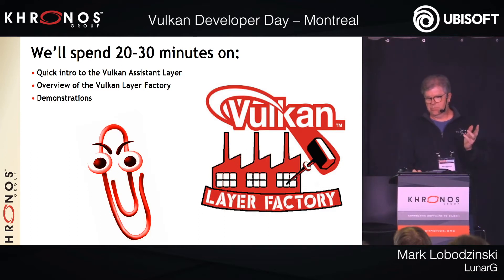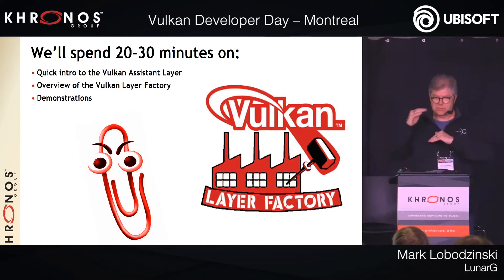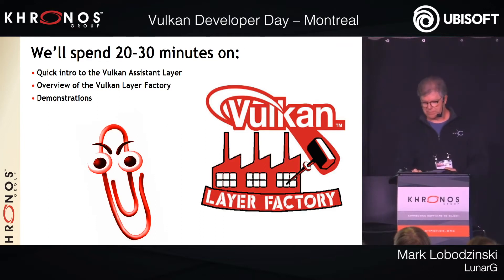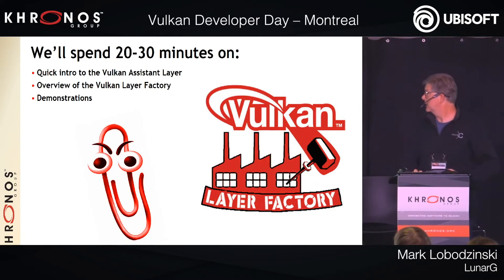Vulkan is a layered API. At the bottom is what's defined by the specification, and then you can insert other layers in between. Part of the API model is that nearly all of the validation is done in some plug-in layers, so you can have them during development and pull them out later so they don't get in your way.